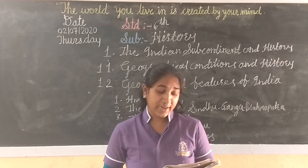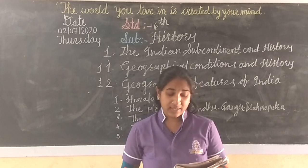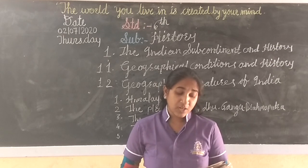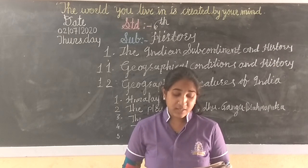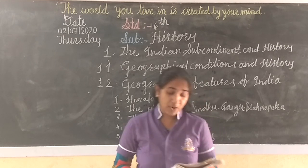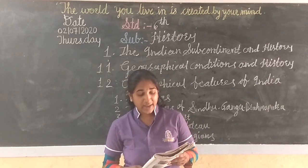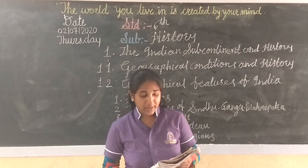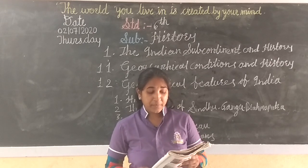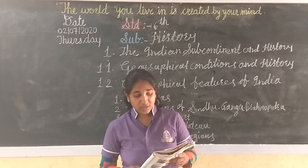Our country India is extended far and wide. To the North are the Himalayas, to the East the Bay of Bengal, to the West the Indian Sea, and to the South the Indian Ocean. Except for the islands of Andaman and Nicobar, the rest of the country is continuous.